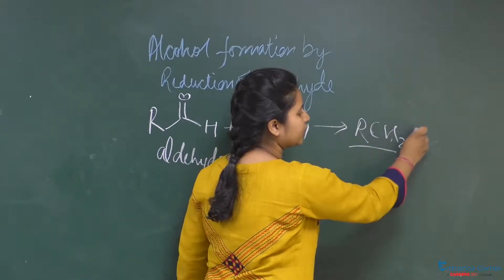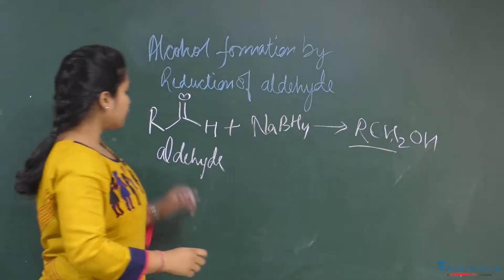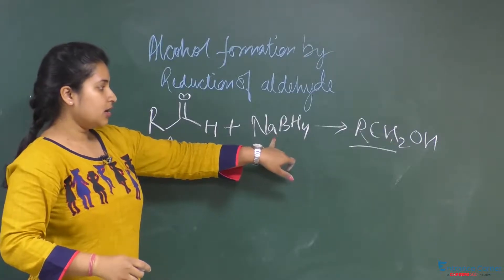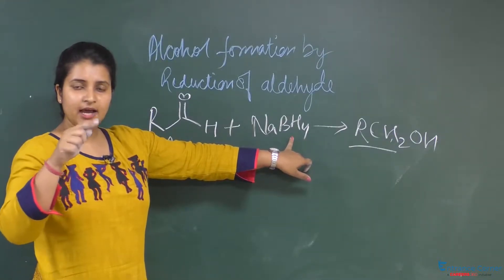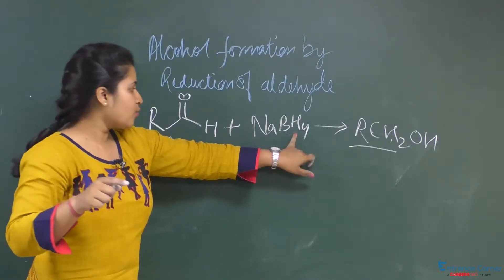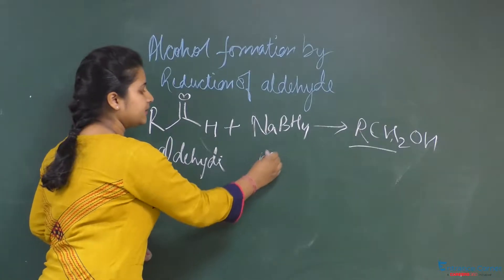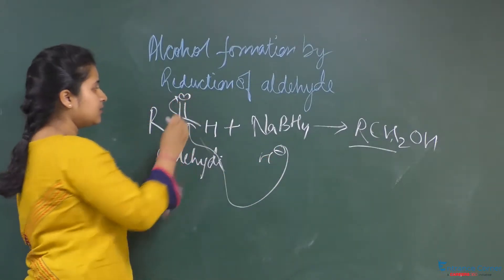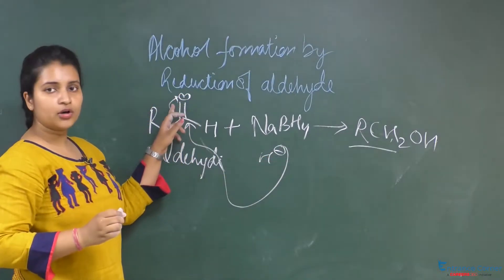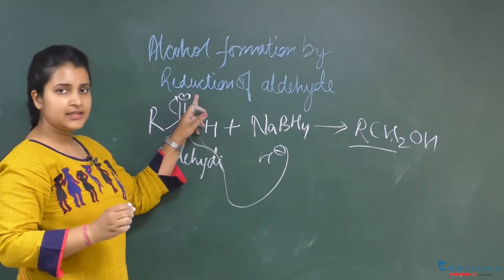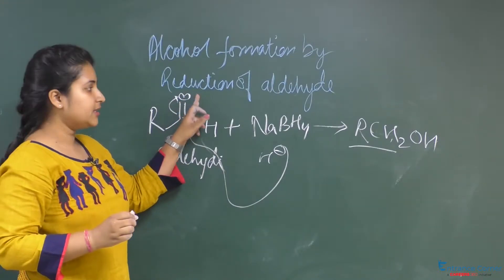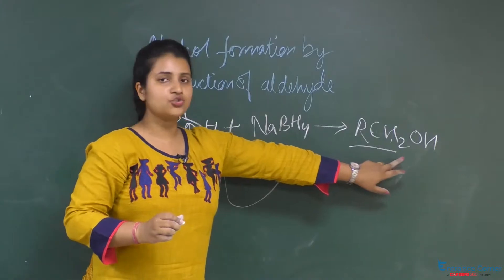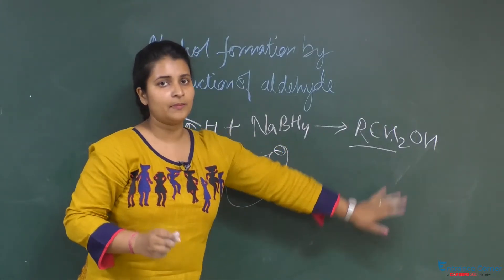This reducing agent has a hydride ion which attacks the carbonyl carbon. The double bond goes to oxygen, carrying a negative charge, and this then on hydrolysis gives CH₂OH, which is an alcohol.